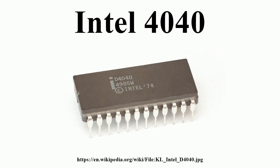New support chips included the 4201 clock generator running at 500 to 740 kHz using 4 to 5.185 MHz crystals, the 4308 1KB ROM, the 4207 general purpose byte output port, the 4209 general purpose byte input port, the 4211 general purpose byte I/O port, the 4289 standard memory interface, the 4702 256-byte UVPROM, and the 4316 2KB ROM.